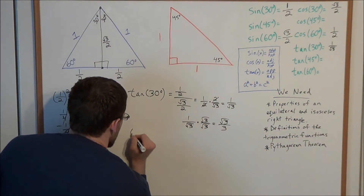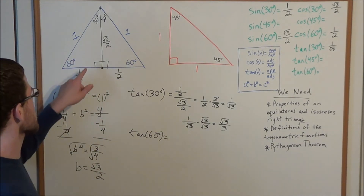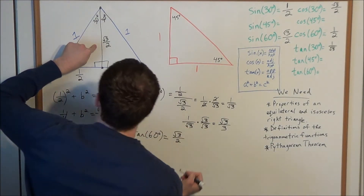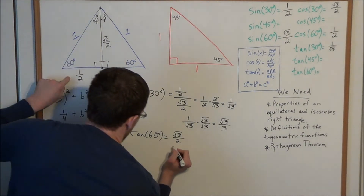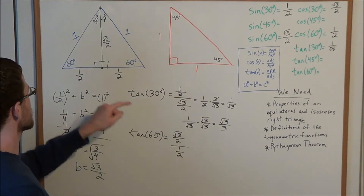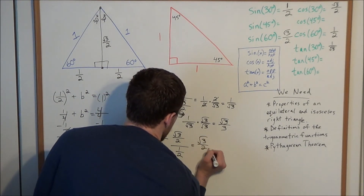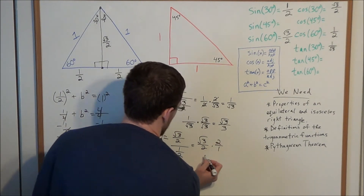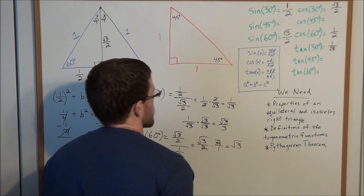Now tangent of 60 degrees: opposite the 60-degree angle is the square root of three over two, divided by the adjacent side of one half. Flipping and multiplying — square root of three over two times two over one — the twos cancel, so tangent of 60 degrees equals the square root of three.